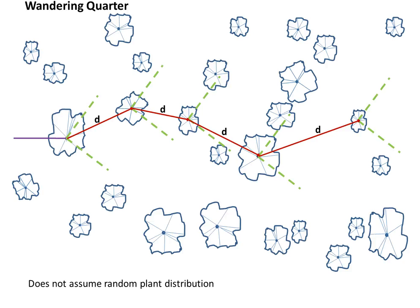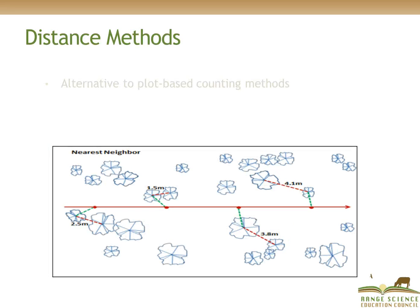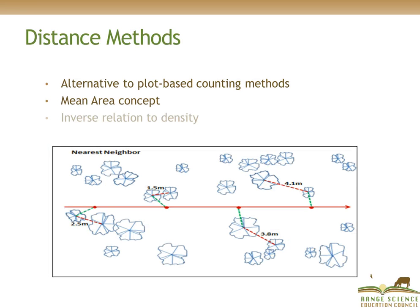To review: distance methods are an alternative to plot-based counting methods. They are united by the mean area concept, and mean area has an inverse relationship to density. There are multiple types of distance methods that can be employed depending on the management objectives and the type of vegetation you are working in.